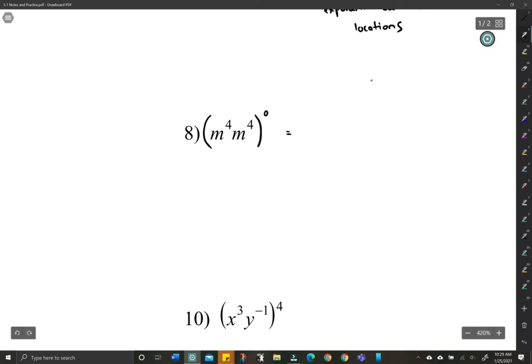So one thing we can think of is, it's almost like we'd be multiplying this here. So there's actually a few ways. We can think of this first as m to the 8th to the 0. 8 times 0 is just m to the 0, which equals 1.